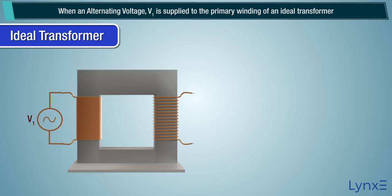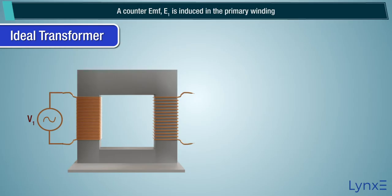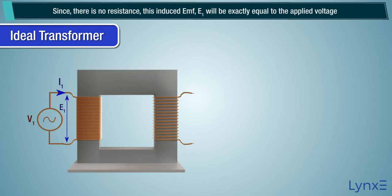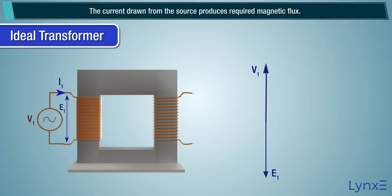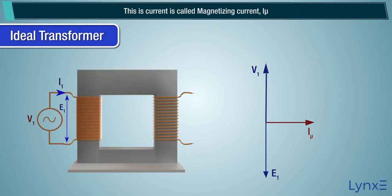When an alternating voltage V1 is supplied to the primary winding of an ideal transformer, a counter EMF E1 is induced in the primary winding. Since there is no resistance, this induced EMF E1 will be exactly equal to the applied voltage, but 180 degrees opposite in phase. The current drawn from the source produces the required magnetic flux. As the primary winding resistance is zero, the current lags EMF E1 by 90 degrees. This current is called magnetizing current I mu.